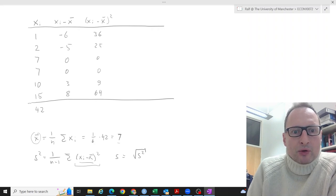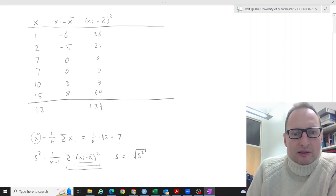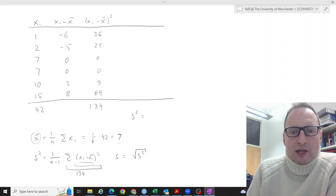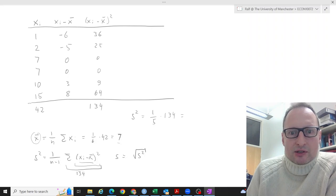So if we sum all of this up, what we get is 134. So this term here is 134. Now to get the sample variance, let me do that here. We need to calculate 1 over n minus 1. So that is 1 over 5 times 134, and that is 26.8.